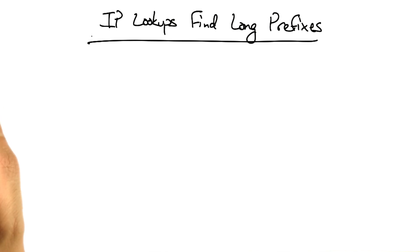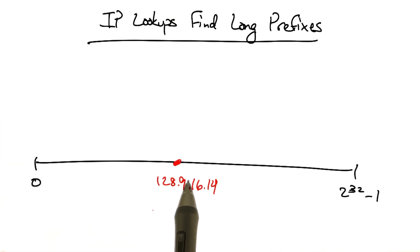IP lookups find longest prefixes. Let's suppose that we want to represent a particular IP address as one point in the space from 0 to 2 to the 32 minus 1, or the range of all 32-bit IP addresses.